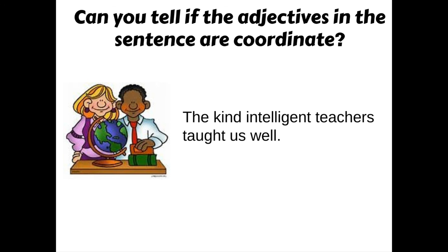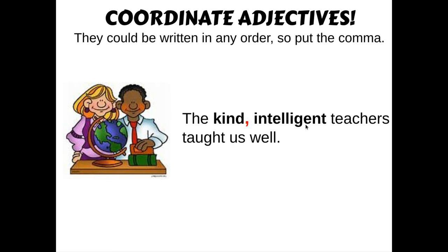So now when you see adjectives in a sentence like that — when there are two or more adjectives in a row right in front of the noun they're describing — take a look at it and do those tests in your head. When you are writing this sentence, 'The kind, intelligent teachers taught us well,' I'm hoping you would see those two adjectives, kind and intelligent, and say, 'Oh, those are coordinate adjectives.' Kind, comma, intelligent — teachers taught us well. Put that comma in and you'll make us proud.